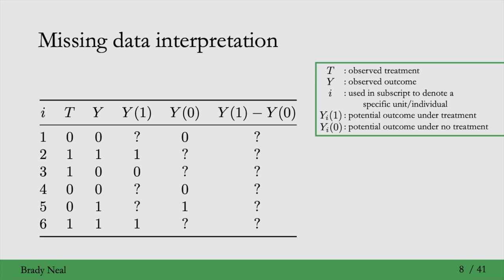Let's go through some rows. The first row: I equals one, treatment equals zero, and they observe an outcome of zero. Because treatment equals zero, they observed their Y(0) potential outcome, but not Y(1). So they can't observe their unit-level causal effect. Similarly, in the second row, T equals one, Y equals one. Because T equals one, they observed Y(1) but not Y(0). Their causal effect is still unobserved — this is the fundamental problem of causal inference. The missing data are the question marks throughout this table.